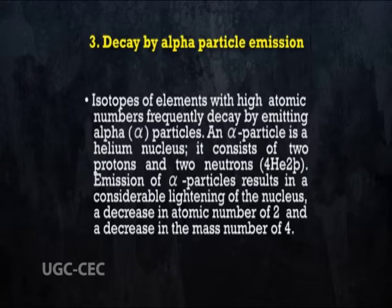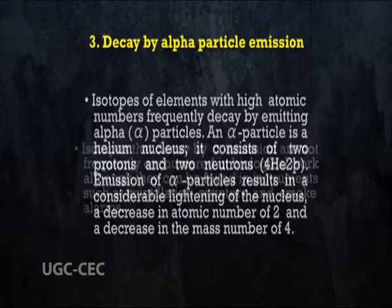Alpha decay results in a decrease in atomic number of 2 and a decrease in the mass number of 4.